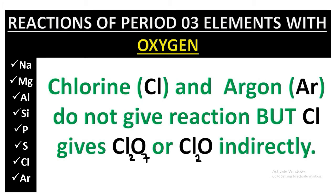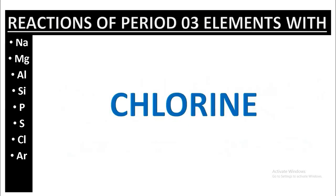Chlorine and argon do not directly react with oxygen. However, chlorine can form Cl₂O₇ or Cl₂O indirectly — it means chlorine doesn't react with oxygen normally. So this was all about the reactions of Period 3 elements with oxygen.